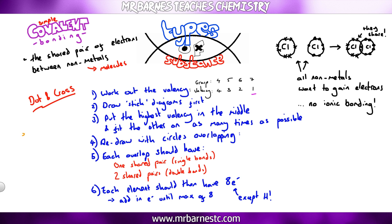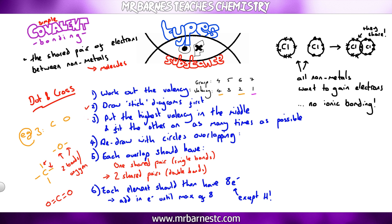The only way this becomes more complicated is if you have a double bond, for example carbon reacting with oxygen to make carbon dioxide. Carbon is in group four so makes four bonds; oxygen is in group six so makes two bonds. Because oxygen can make two and carbon can make four, you join them up as many times as possible — so carbon reacts with two oxygens with two double bonds between them. I redraw that with circles overlapping, and because it's a double bond I put two shared pairs in: two dots and two crosses. I then make sure I have eight electrons — carbon is correct but oxygen isn't, so I fill them out.